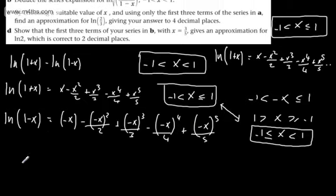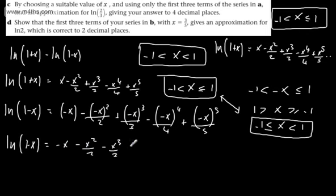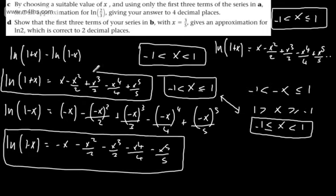Let's tidy this up. The natural log of 1 minus x equals −x − x²/2 − x³/3 − x⁴/4 − x⁵/5 ... So if we take this expansion and subtract it away from the expansion of ln(1+x), we're going to get the result we need.